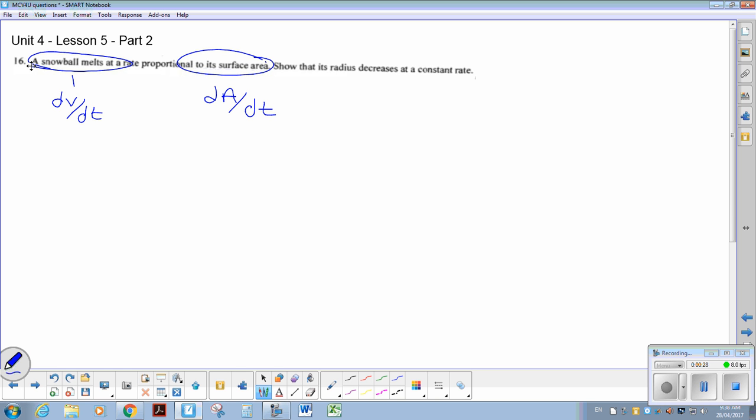We want to show that the radius decreases at a constant rate, so we're trying to prove that dr by dt is equal to zero, which would indicate that if the derivative is zero, that means that it must have been a constant at some point in time. So we are trying to prove that the dr by dt is in fact equal to zero or a constant.